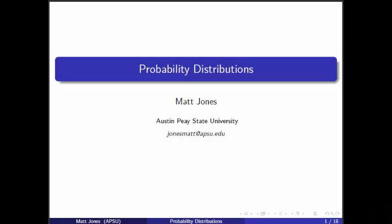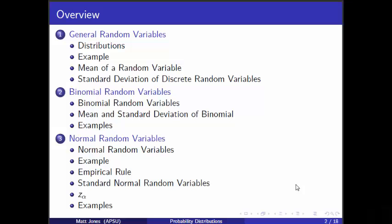My name is Matt Jones and I am a random variable. Let's talk about probability distributions. In this set of notes we're going to talk about random variables. A random variable is the outcome of an experiment that cannot be predicted with certainty, but it's numerically valued and has units. These things have distributions and we'll talk about how to compute the mean and the standard deviation of random variables, at least discrete ones.